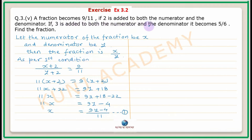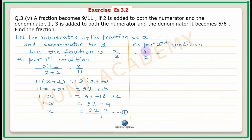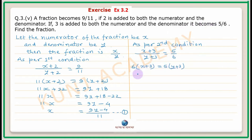As per the second condition, if 3 is added to both the numerator and the denominator, it becomes 5 by 6. So x plus 3 upon y plus 3 equals 5 upon 6. By cross multiplication: 6x plus 18 equals 5y plus 15.